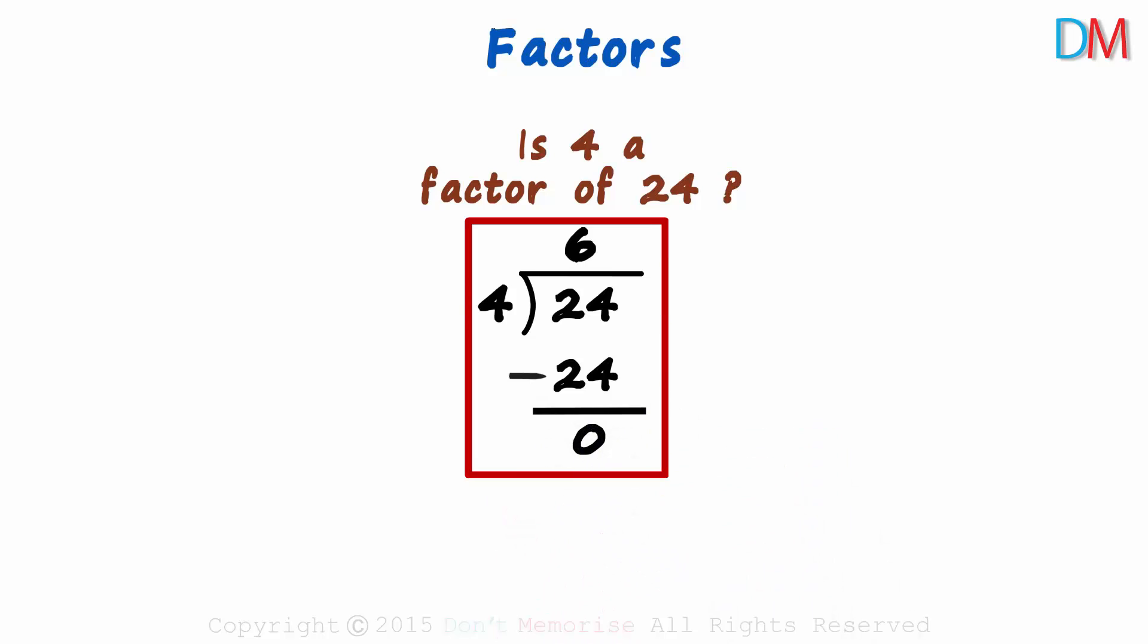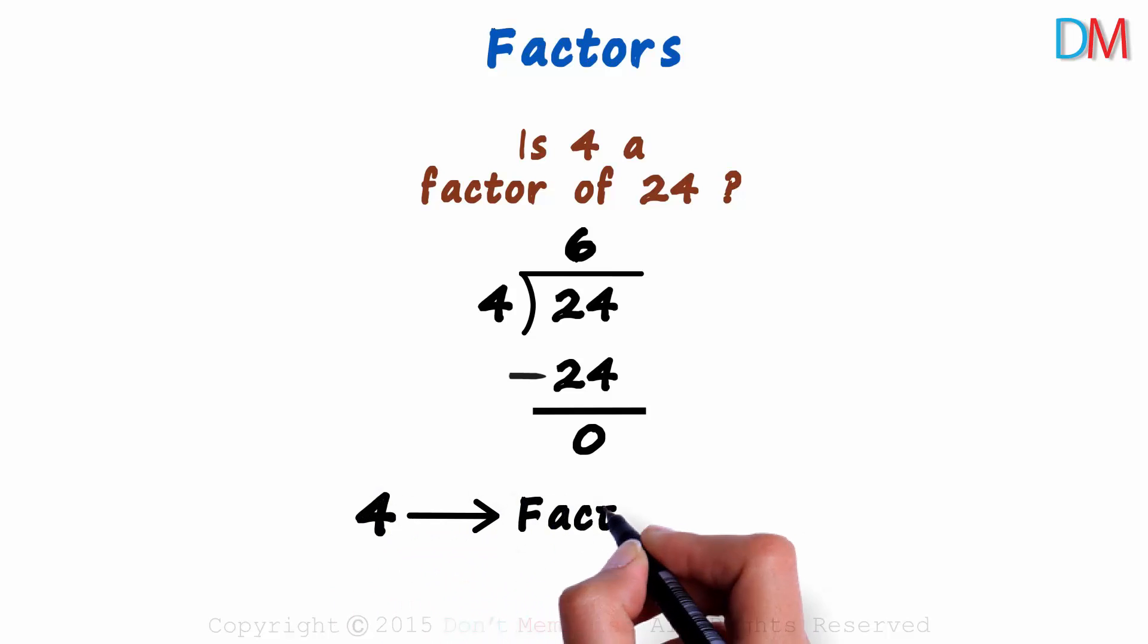So what does this imply? After the division, if the remainder equals 0, it tells us that the divisor is a factor of the dividend. Since the remainder is 0 here, we say that 4 is a factor of 24.